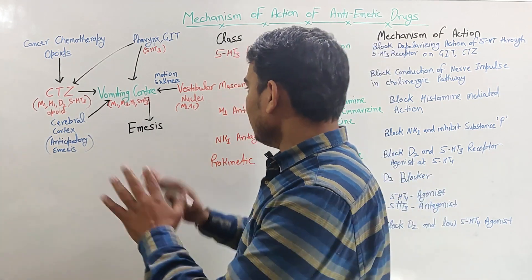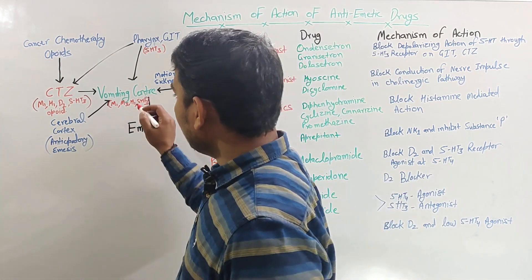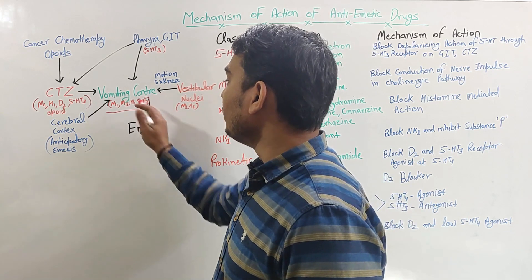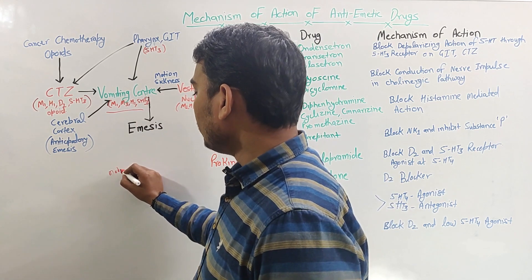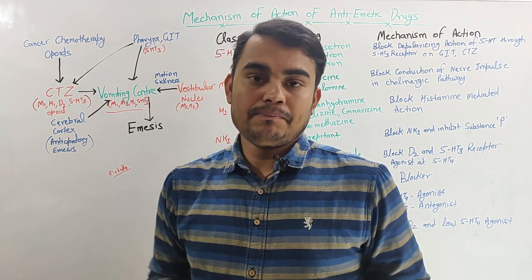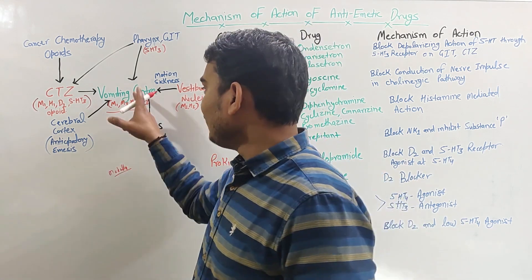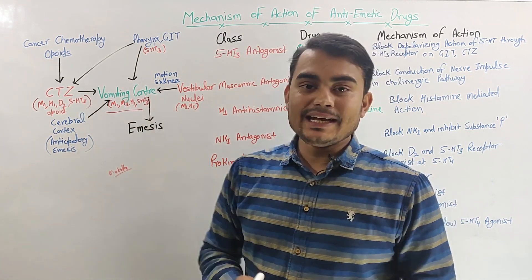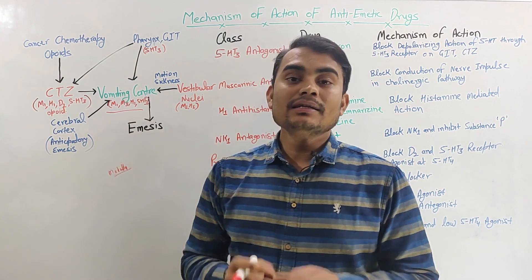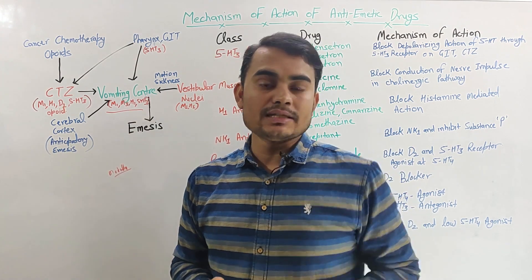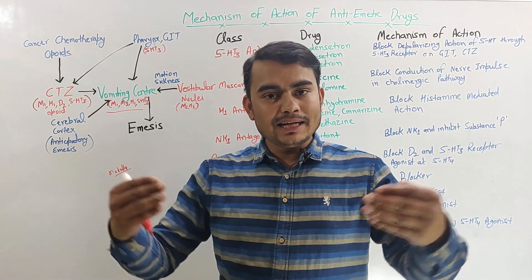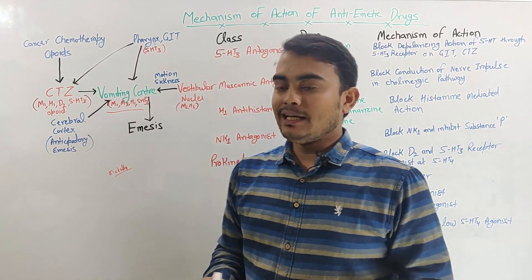I have summarized all the emesis mechanism pathways here. Starting with the first and main center — that is the vomiting center. This vomiting center is located in the medulla oblongata and is the primary center from which emesis starts. This vomiting center has different receptors: muscarinic M1 and M3 receptors, histaminic H1 receptor, and the serotonergic 5-HT3 receptor.